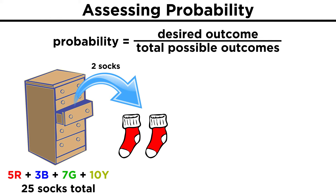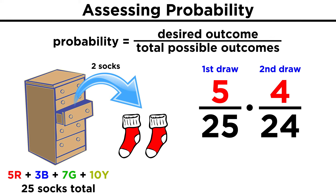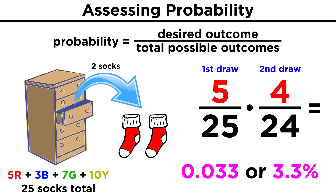What about the probability of pulling out two socks and getting a red pair? As we said, it's five out of twenty-five for the first one. But for the second, now there are four red socks and only twenty-four socks left to choose from, so that's a four out of twenty-four probability for the second event. We multiply these together and we get 0.033, or a three point three percent probability — not the best odds by any means.